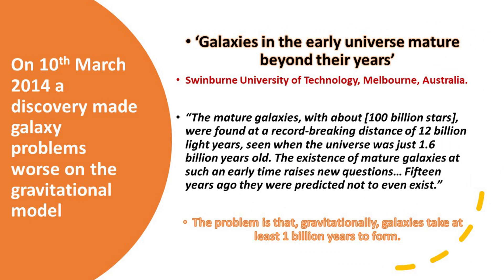On the 10th of March 2014, a discovery made galaxy problems worse on the gravitational model. An official research report from Swinburne University of Technology, Melbourne, Australia, was headlined: Galaxies in the early universe mature beyond their years. The report read, and I quote, the mature galaxies with about 100 billion stars were found at a record-breaking distance of 12 billion light-years, seen when the universe was just 1.6 billion years old. The existence of mature galaxies at such an early time raises new questions. Fifteen years ago they were predicted not to even exist, end quote.